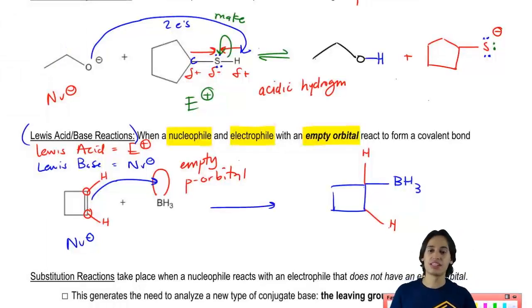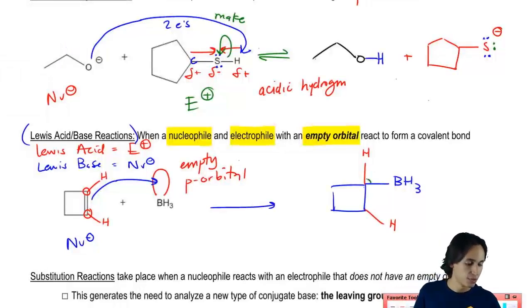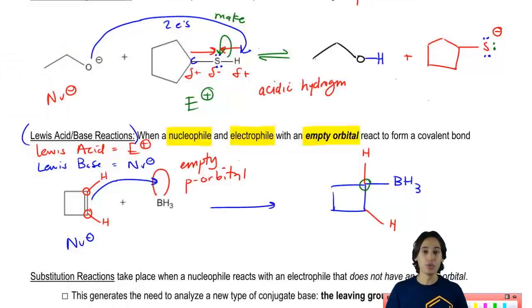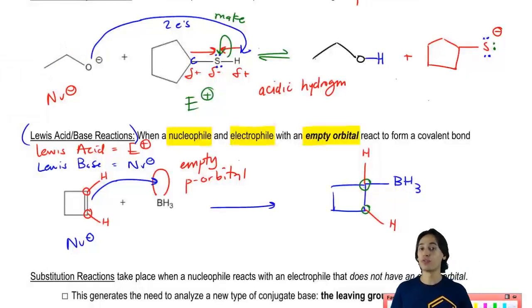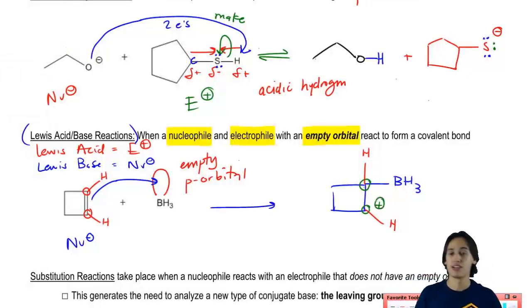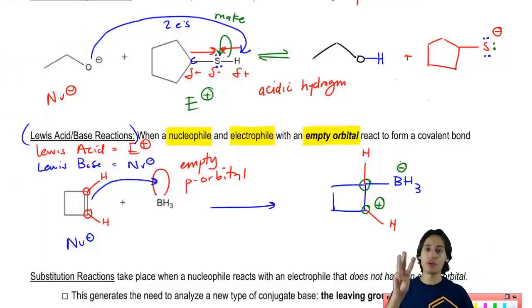The only difference is that now one of the carbons is happy. Its octet is filled because it has four bonds. The other one is not happy because it only has three. So what are the formal charges? There's going to be a positive charge here because that carbon is missing electrons. There's going to be a negative charge here because boron wants to have three bonds and now it has four.